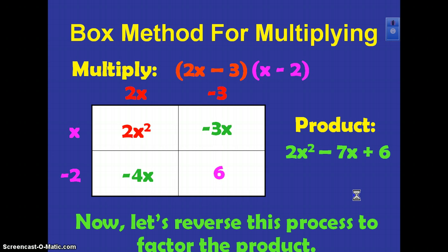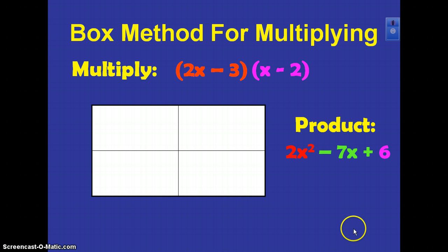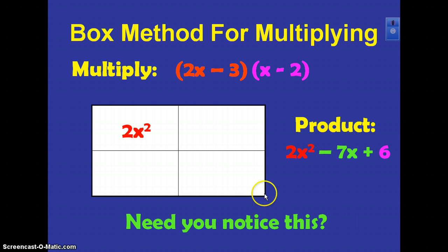Now I want you to try to develop a plan for factoring this trinomial. Can you do that? What do you think our plan is going to be? All right, we're starting with our product and we're going to factor it back to this original. We already know the first step: the 2x squared goes in this box and your constant term goes down here. Did you notice that?